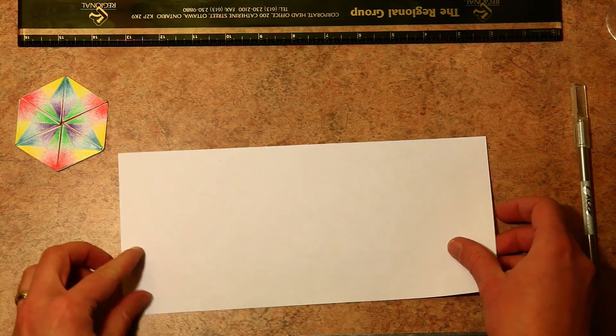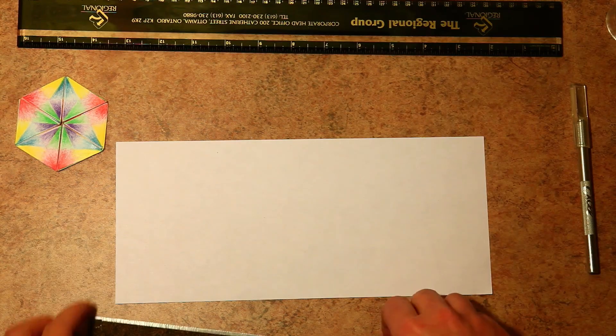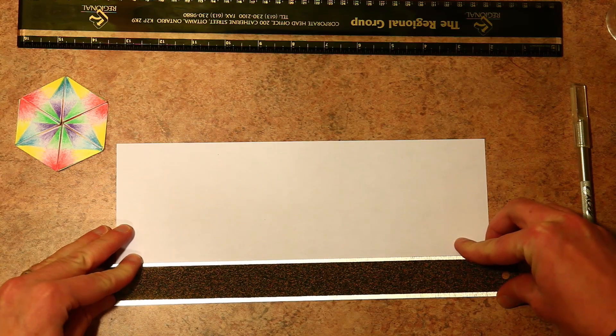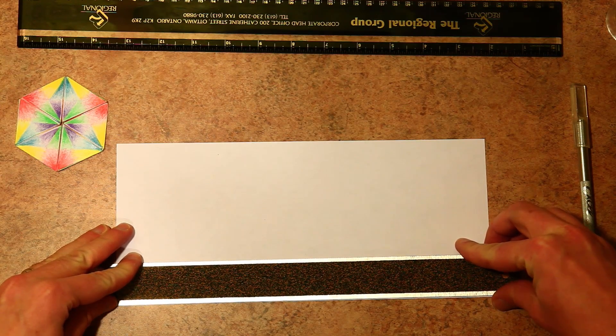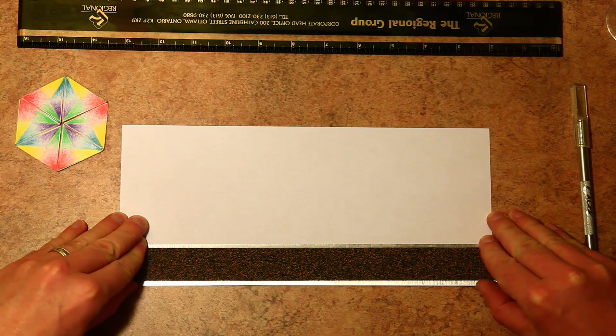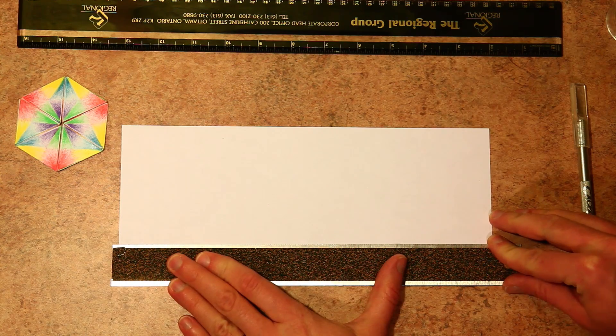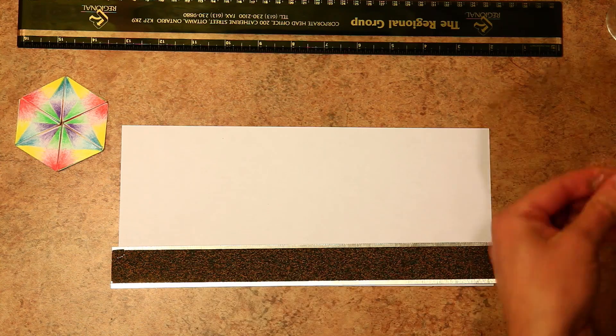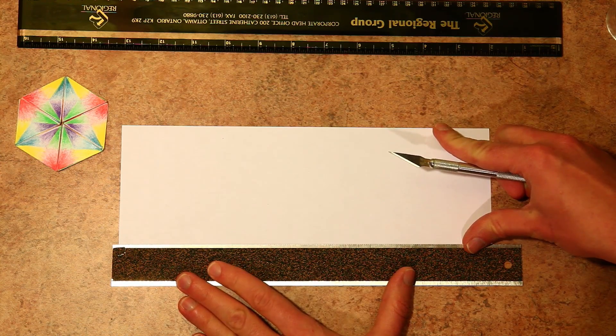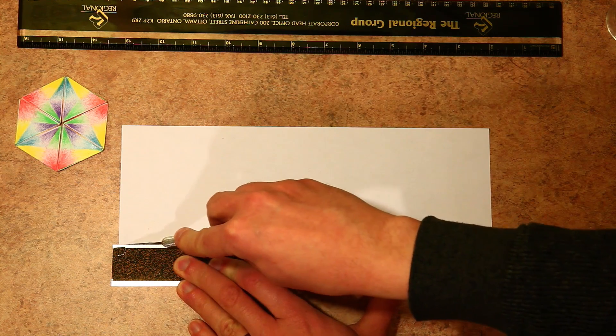A couple of people have asked me for a tutorial on how I made my dodecahexaflexagon, so I'm going to start here with building a regular trihexaflexagon, then I'll move on to a hexahexaflexagon, and then from there I'll move on to the dodecahexaflexagon. I'll try to be quick here so that I don't bore you with the details.